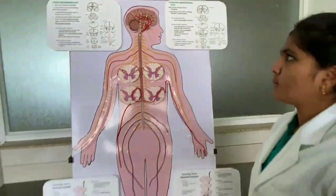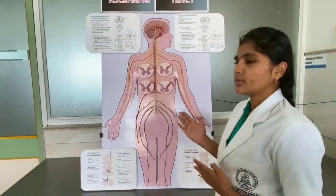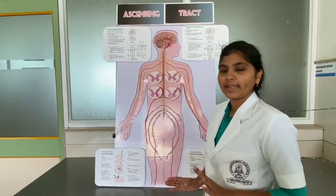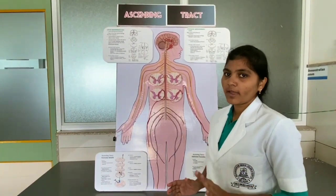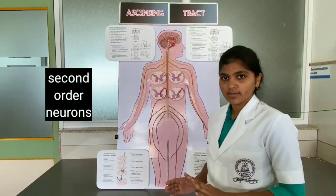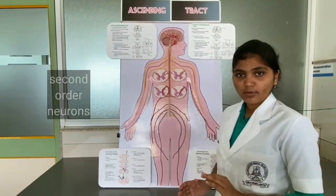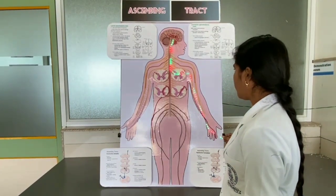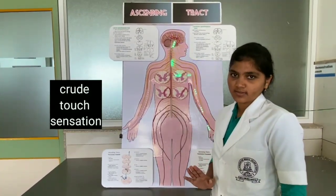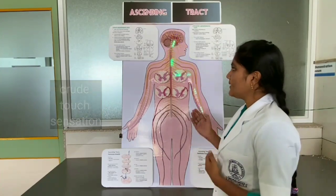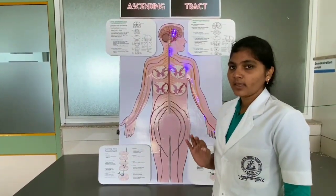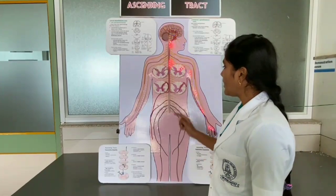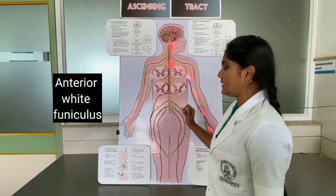Now we are going to see about the anterior spinothalamic tract. The anterior spinothalamic tract is formed by the fibers of second order neurons of the pathway for crude touch sensation. The situation of the anterior spinothalamic tract is the anterior white funiculus near the periphery.